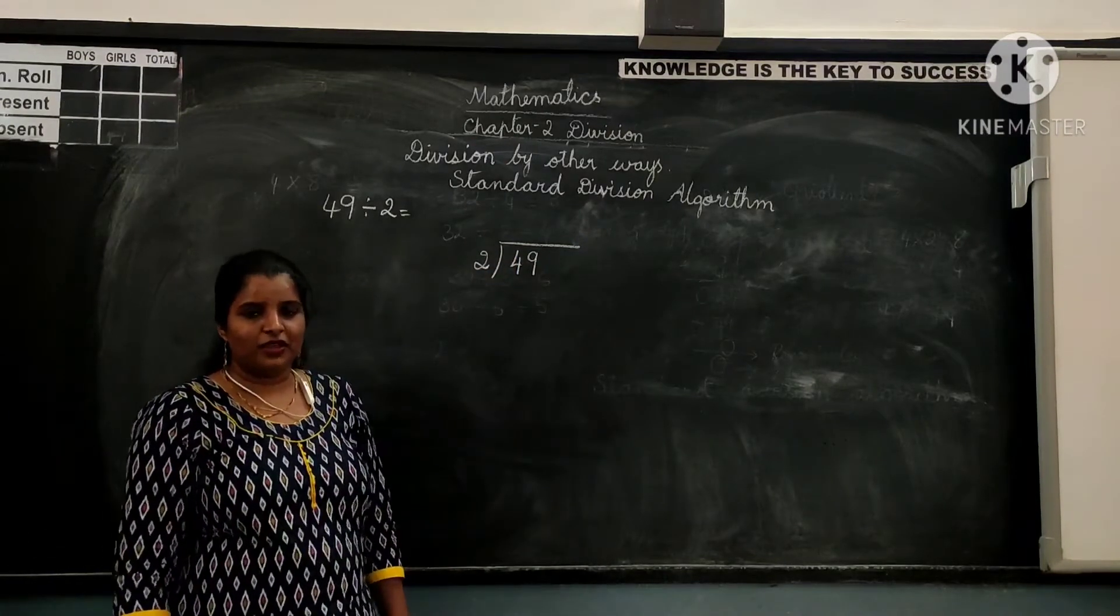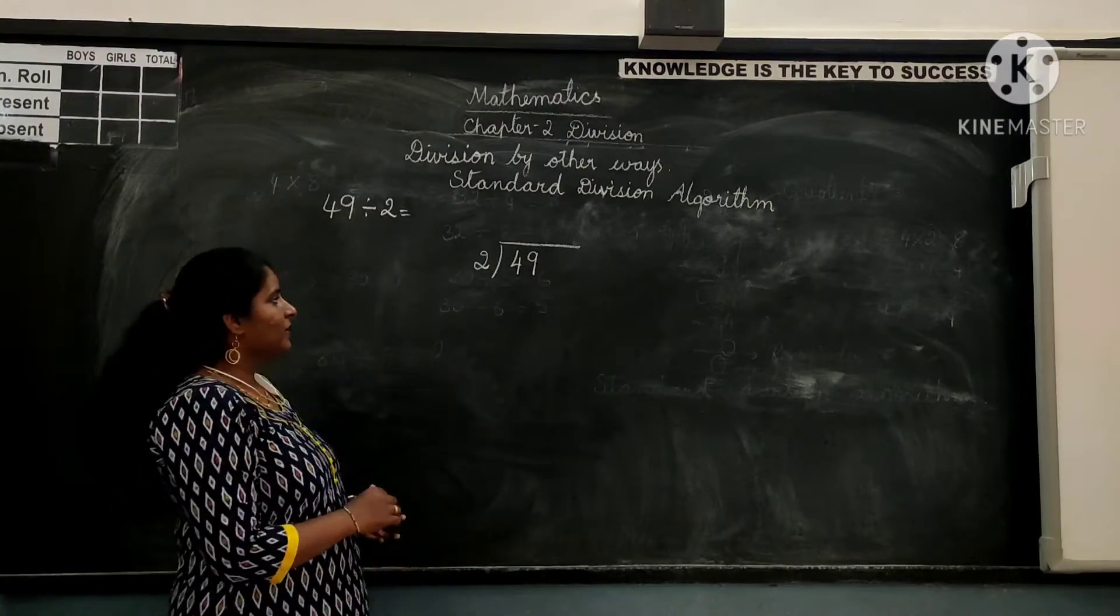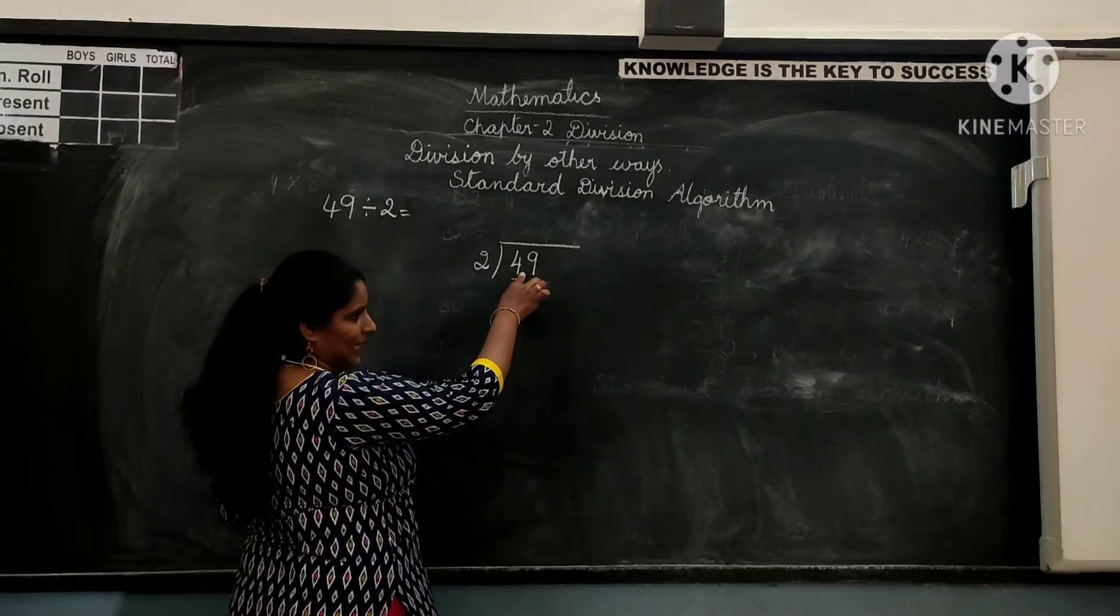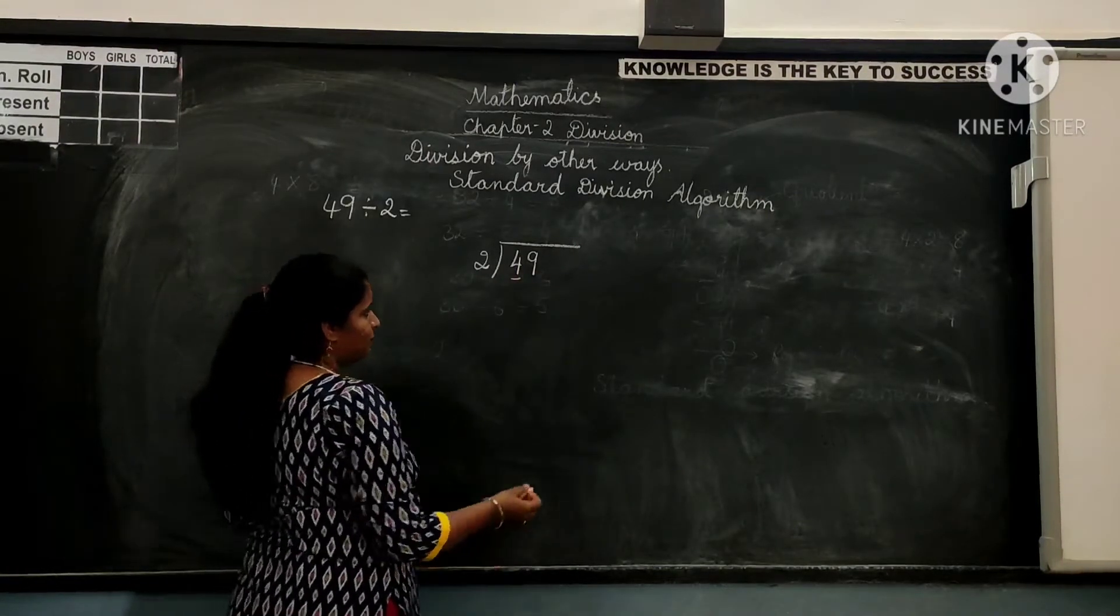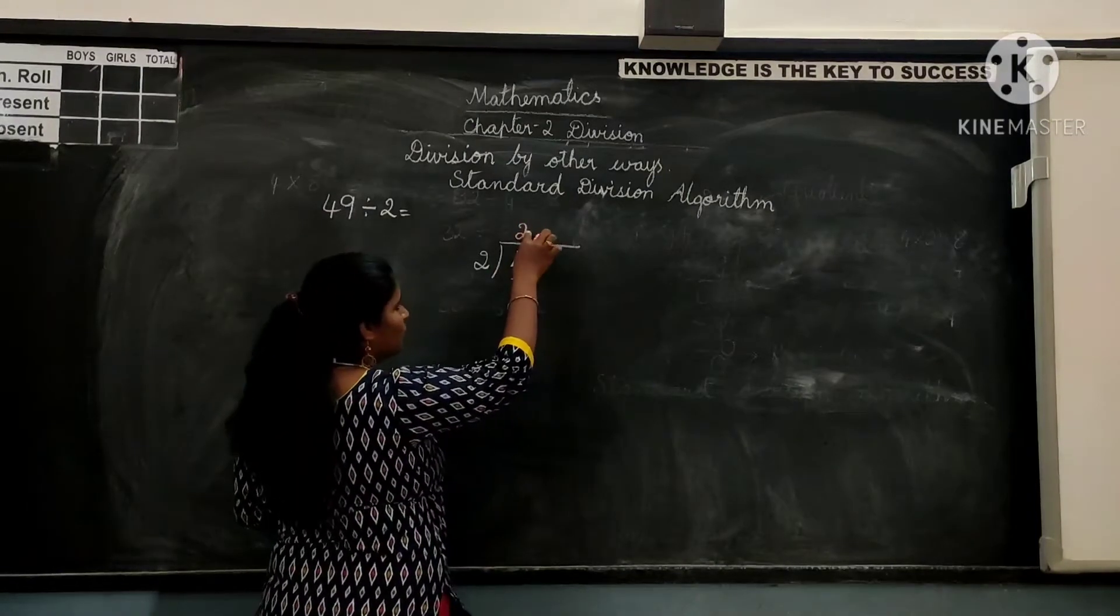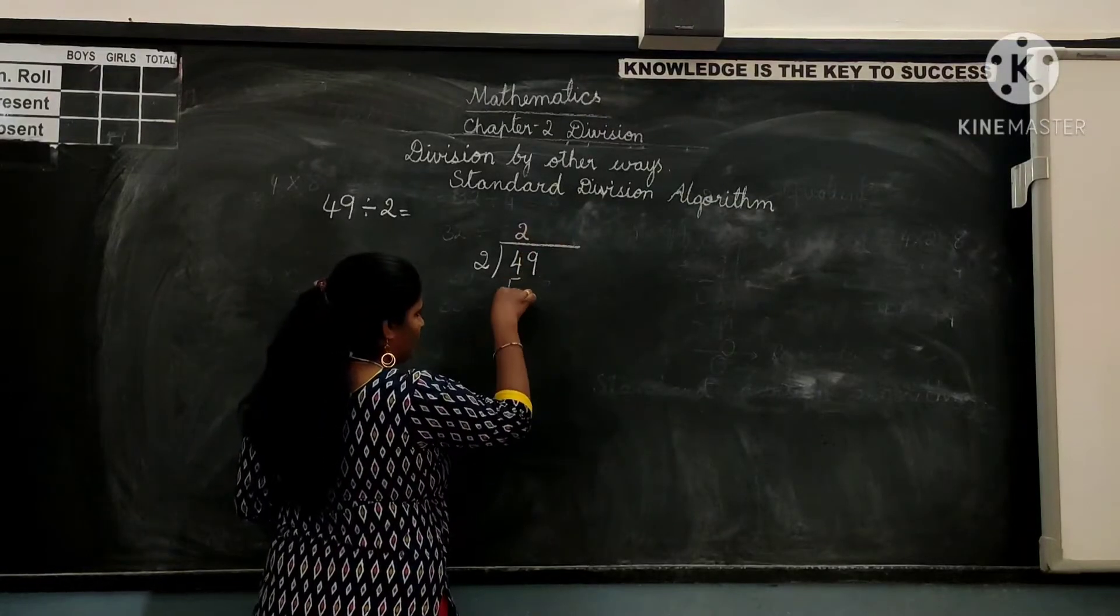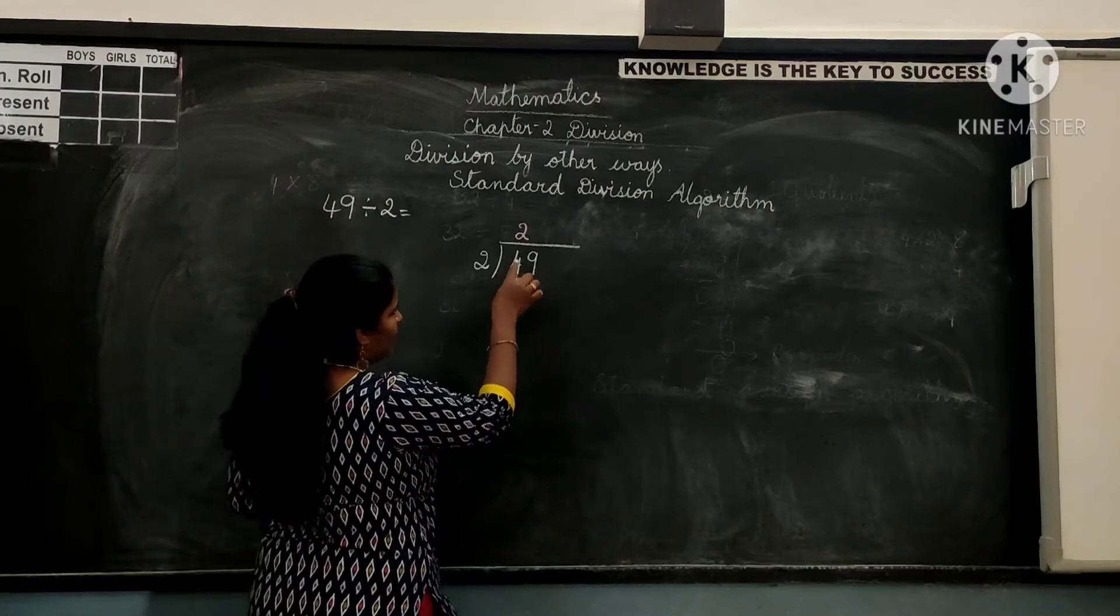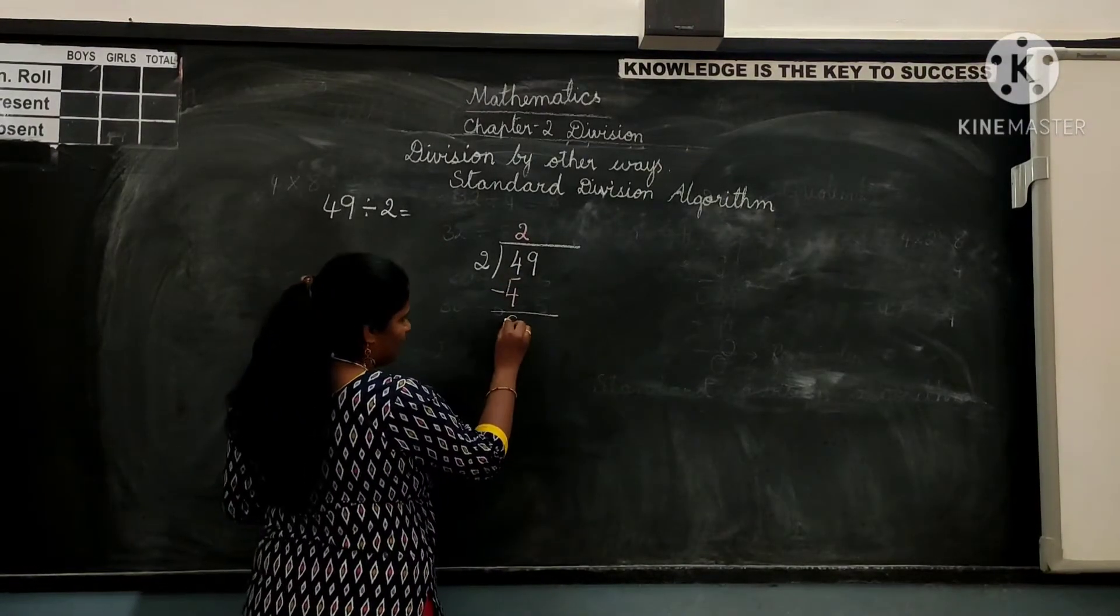Start division from the digit in highest place of the dividend. That is 4. So we have 4 in 10th place of the dividend. So 2 two times give us 4. Write 2 as the first digit of the quotient. Write 4 down below the dividend. Now subtract 4 from 4. 4 minus 4 gives you 0.